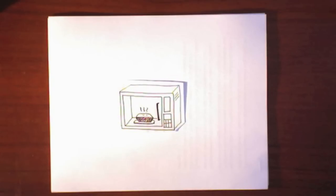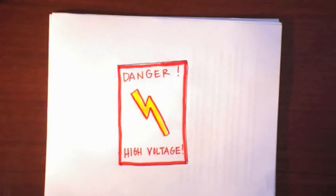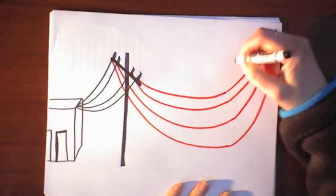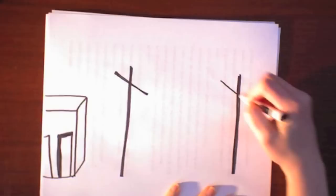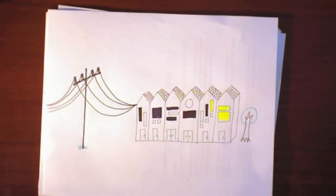So here's the trick. The power being generated has to match the power used at all times. If there's too much power pushed into the lines, they would basically start to melt. If there's too much power being sucked out, the voltage would drop to the point where we'd see rolling blackouts.